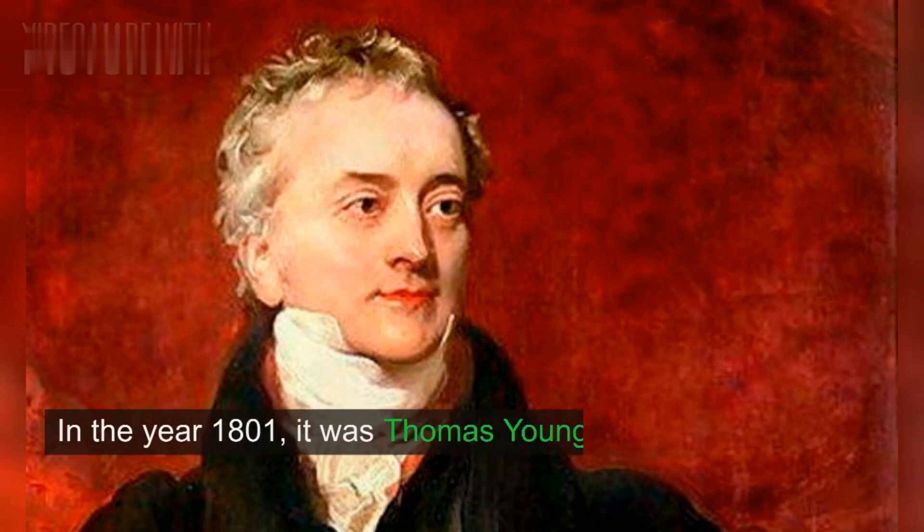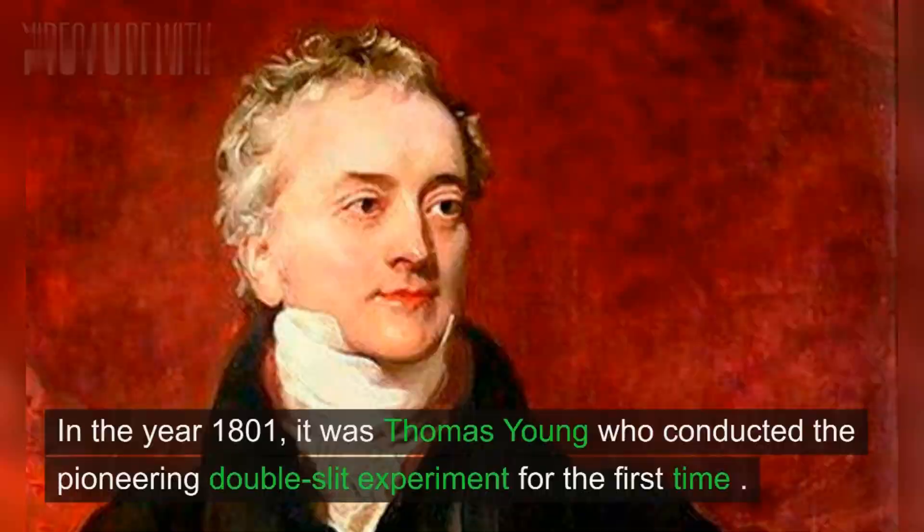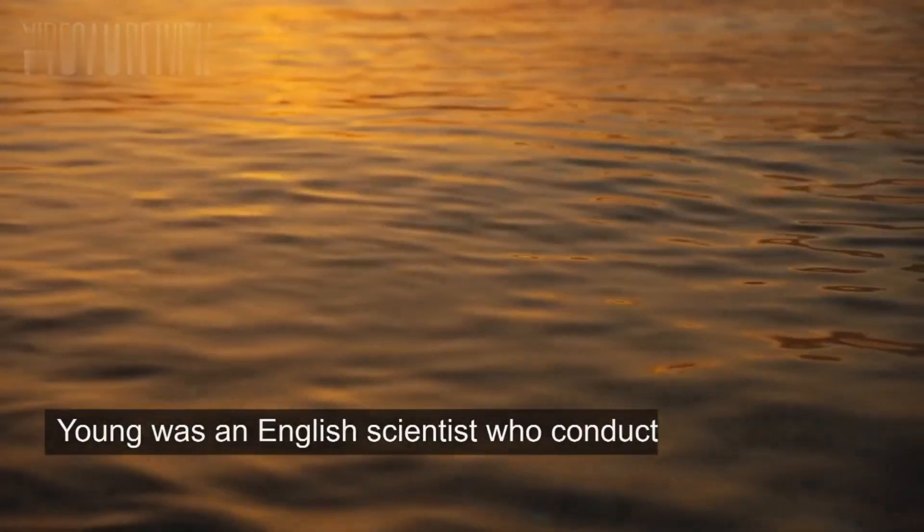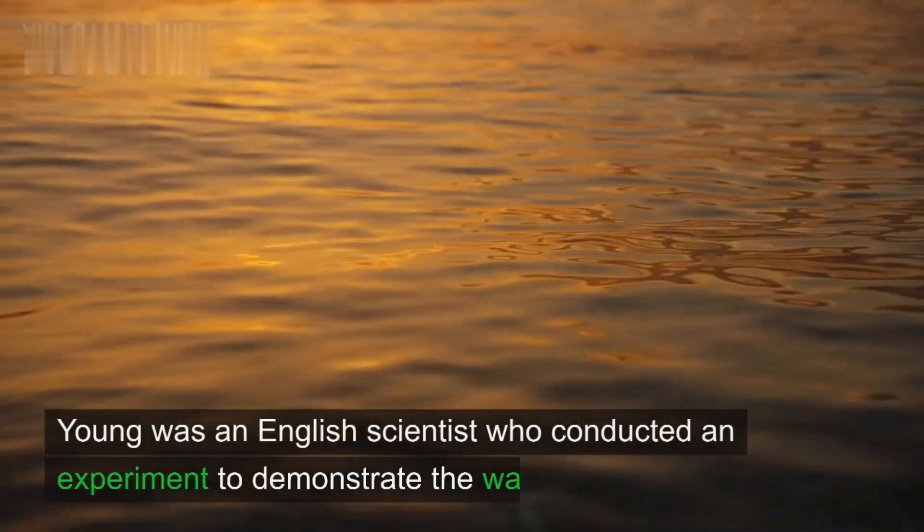In the year 1801, it was Thomas Young who conducted the pioneering double-slit experiment for the first time. Young was an English scientist who conducted an experiment to demonstrate the wave nature of light. His experiment laid the foundation for understanding the phenomenon of interference in waves.